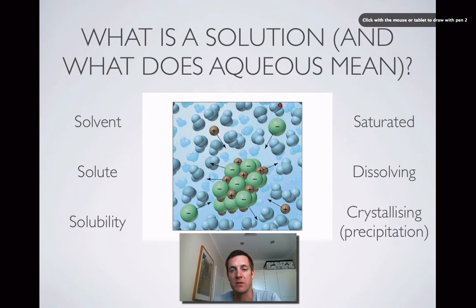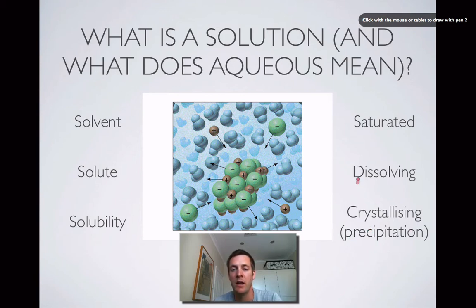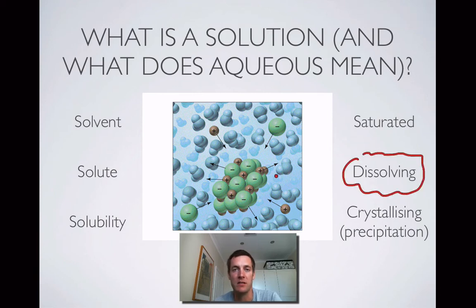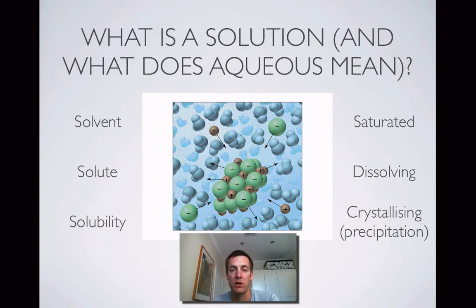When something becomes solid again or comes out of solution, we're talking about crystallizing. So if I had a saturated solution and I started to evaporate some of the solvent, I'd be left with some of the solute behind — it would come out of solution and crystallize, even though that solid often doesn't look particularly like crystals. Dissolving can be explained as the homogeneous spreading of a solute through a solvent. Watch that slide again if you want to be sure of those key terms, because they really are quite important.